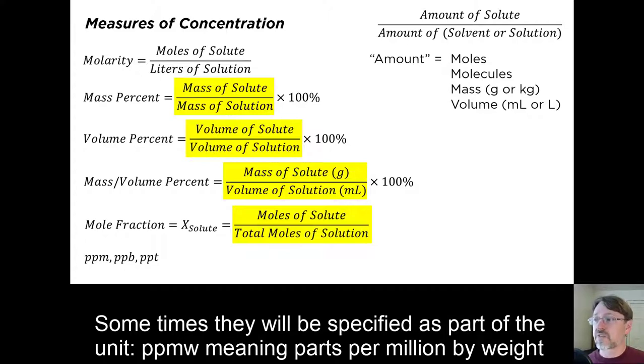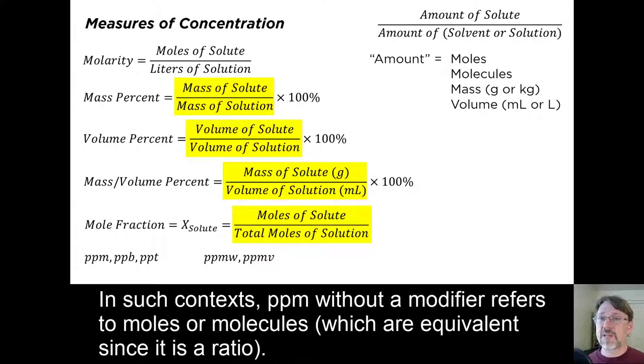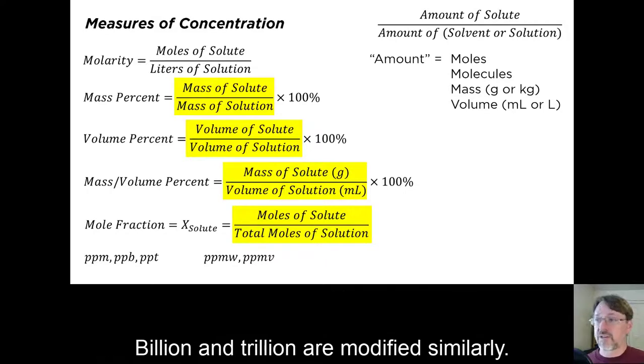Sometimes they will be specified as part of the unit. ppmw, meaning parts per million by weight, which we as chemists understand to mean mass, or ppmv for parts per million by volume. In such contexts, ppm without a modifier refers to moles or molecules, which are equivalent since its a ratio. Billions and trillions are modified similarly.